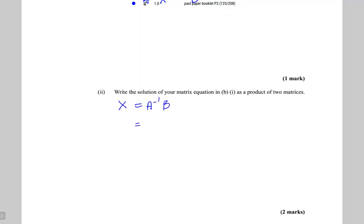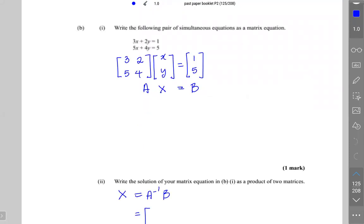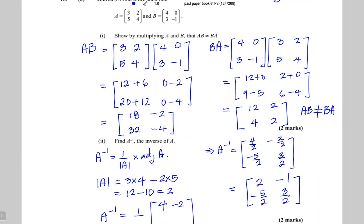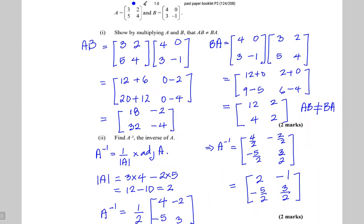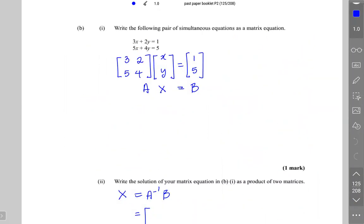A inverse we found on the previous page. The examiner said write the solution as a product of two matrices — not solve it. So A inverse, which was 2, minus 1, minus 5 over 2, 3 over 2, times B, which is 1, 5. That's the answer — X equals A inverse times B, written as a product of two matrices.